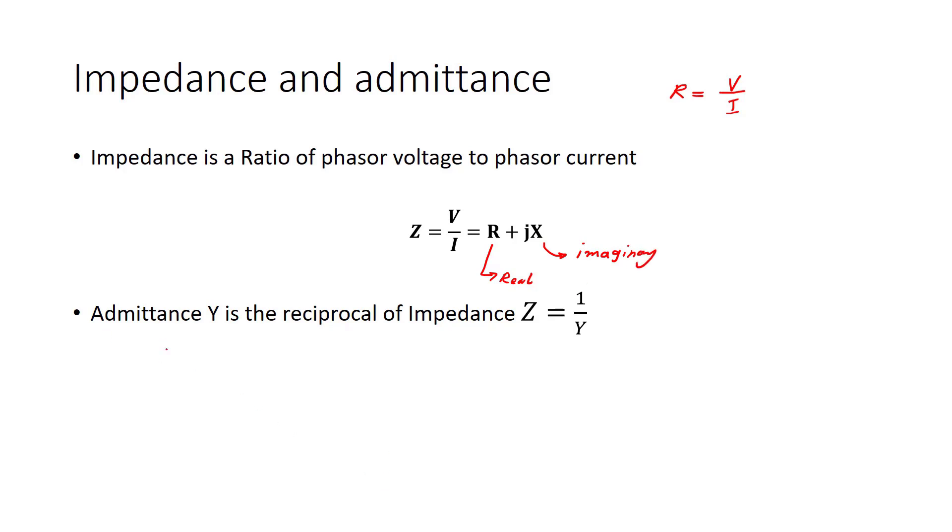And what about the admittance? It's exactly opposite of impedance. So impedance is equal to 1 over Y. So we can also say that admittance is equal to 1 over Z.